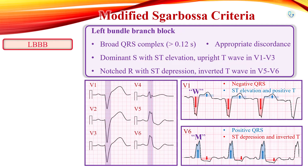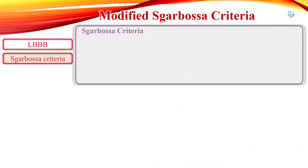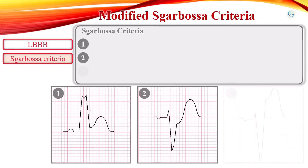Therefore, the diagnosis of myocardial infarction in left bundle branch block can be difficult. In 1996, Dr. Elena Sgarbossa developed and validated a clinical prediction rule to diagnose myocardial infarction in the setting of left bundle branch block. The original scoring system, commonly known as the Sgarbossa criteria, includes three criteria.